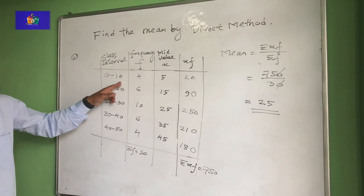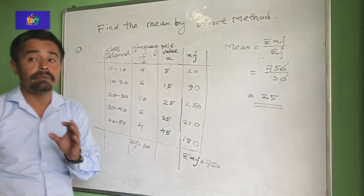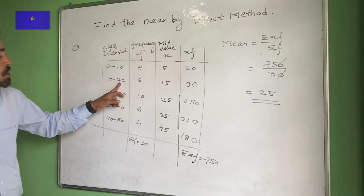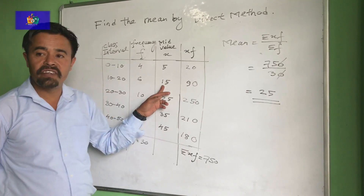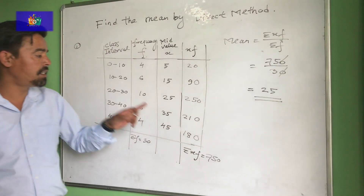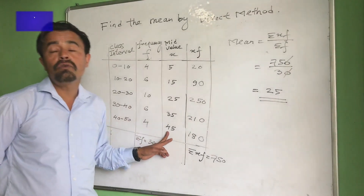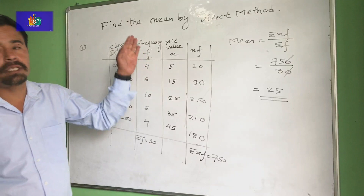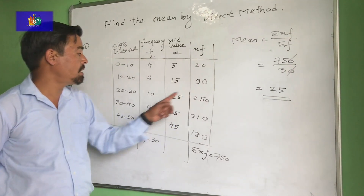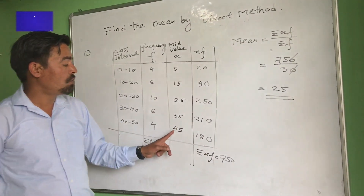Recapping: class intervals are 0 to 10, 10 to 20, 20 to 30, 30 to 40, 40 to 50. Mid values computed by dividing sums by 2 give 5, 15, 25, 35, 45. Then XF values: 4 times 5 is 20, 6 into 15 is 90, 10 into 25 is 250, 6 into 35 is 210, 4 into 45 is 180.